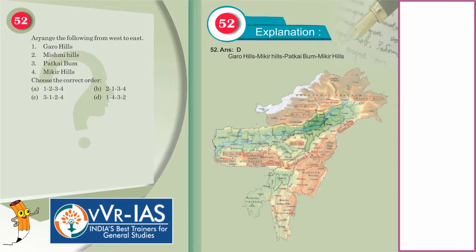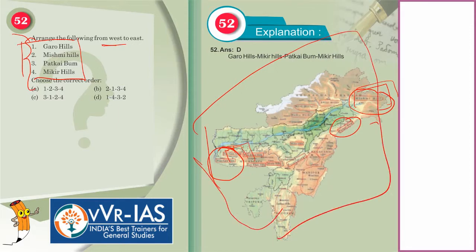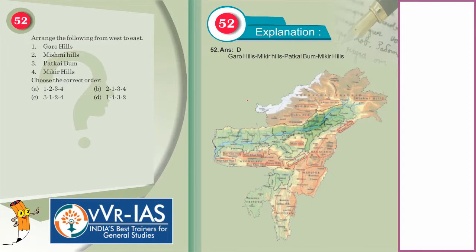The 52nd question requires arranging hills in the northeast from west to east. The Garo hills are in the Meghalaya or Assam region. The Mishmi hills are in Arunachal Pradesh. The Patkai range is further along. You must have this map clearly imprinted in your brain — you have the Garo, Khasi, and Jaintia hills, then the Mikir hills, then the Patkai range, then the Mishmi, then Abor, Dafla, etc. Arranging from west to east: Garo, Mikir, Patkai Bum, and Mishmi.